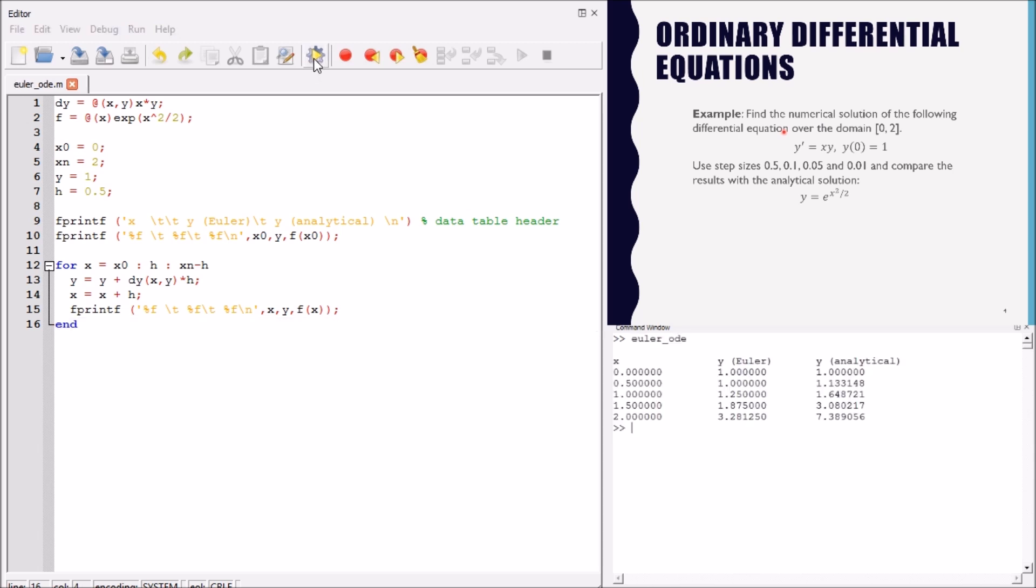Let's run the code. This is the solution at step size 0.5. We notice that there's a big difference, especially at the final row. 0.5 does not give good solution. So, let's try 0.1 and run the code.